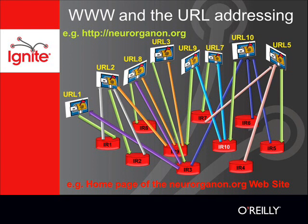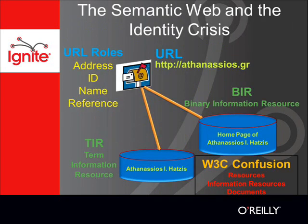The Semantic Web, though, overloaded URL with identity and naming of web resources, and that led to the identity crisis. In spite of ten years of evolution of the Semantic Web, the problem is still present: binary information resources are mixed with non-binary ones, and digital realizations are confused with the actual entities they represent.